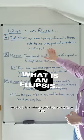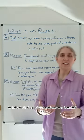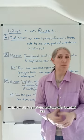What is an ellipsis? An ellipsis is a written symbol of usually three dots to indicate that a part of a sentence has been left out.